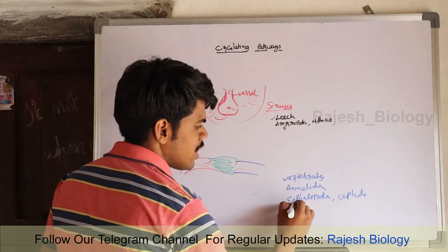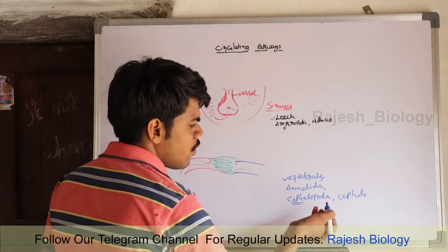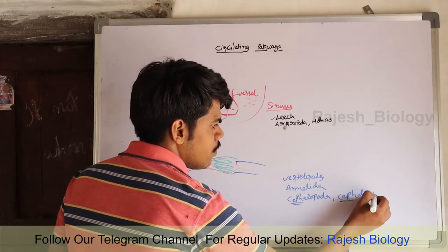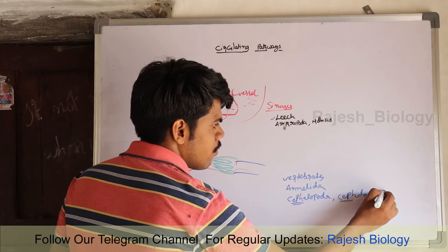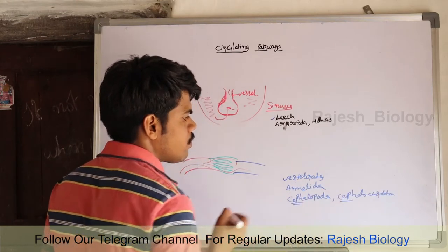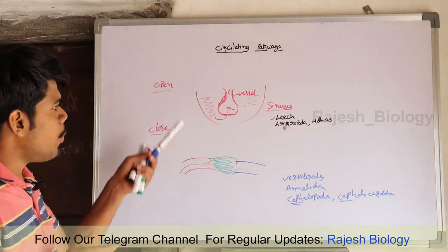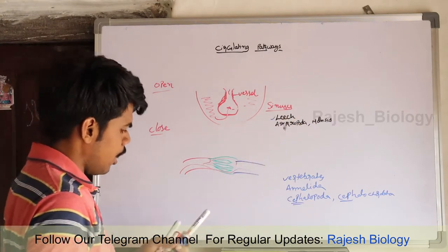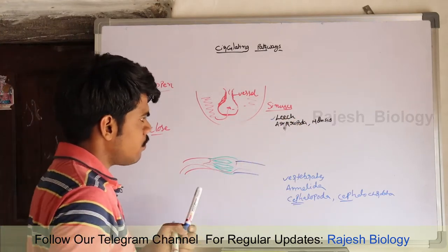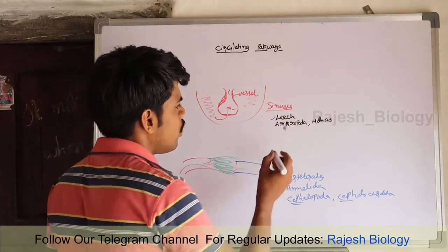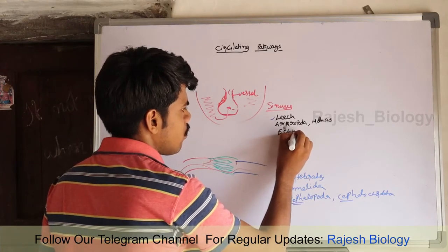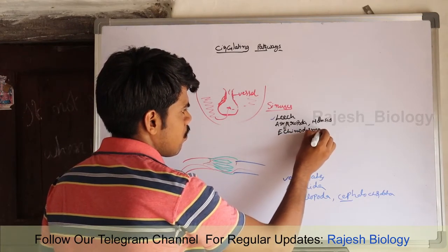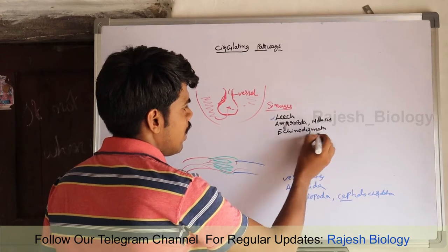Except leech, Cephalopoda and Cephalocardata also show closed type. Cephalopoda is a class under phylum Mollusca. Open type of circulatory system is found in Arthropoda, Mollusca, Echinodermata, and Ascidians.